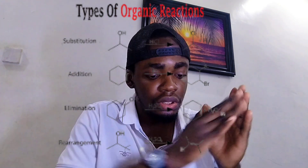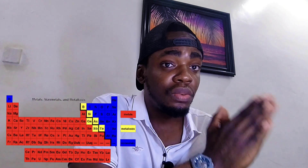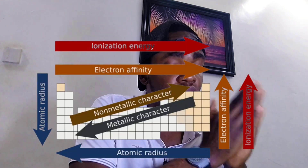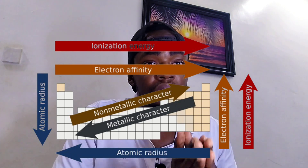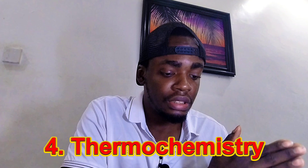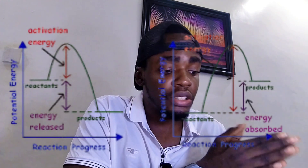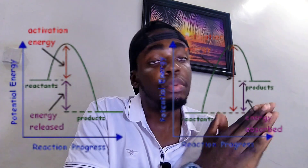Number three is periodic table and periodicity. Under this topic you need to study classification of elements — which are metals and which are non-metals — and periodic properties and trends across the periods and groups. Number four is thermochemistry: heat changes in reactions, enthalpy change, enthalpy of reactions, Hess's law, and bond energy.